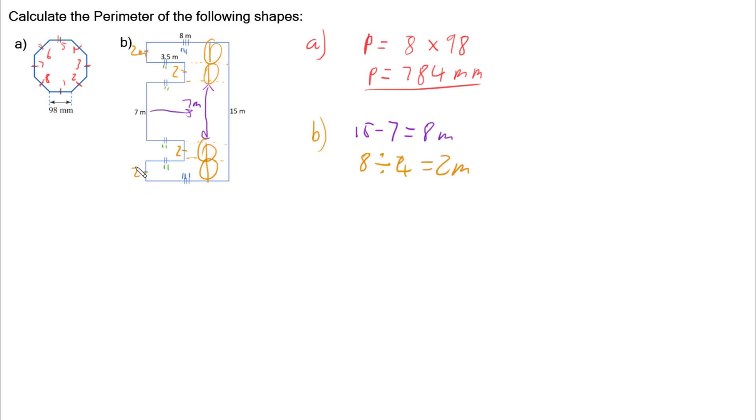So my perimeter for part B is going to be: we've got this 15 metres here, so we have 15. Then we add on this 8 metre and this 8 metre. So that's 2 lots of 8 metres, so 2 times 8. Then we add 1, 2, 3, 4 lots of 2 metres, so 4 times 2. And then finally,